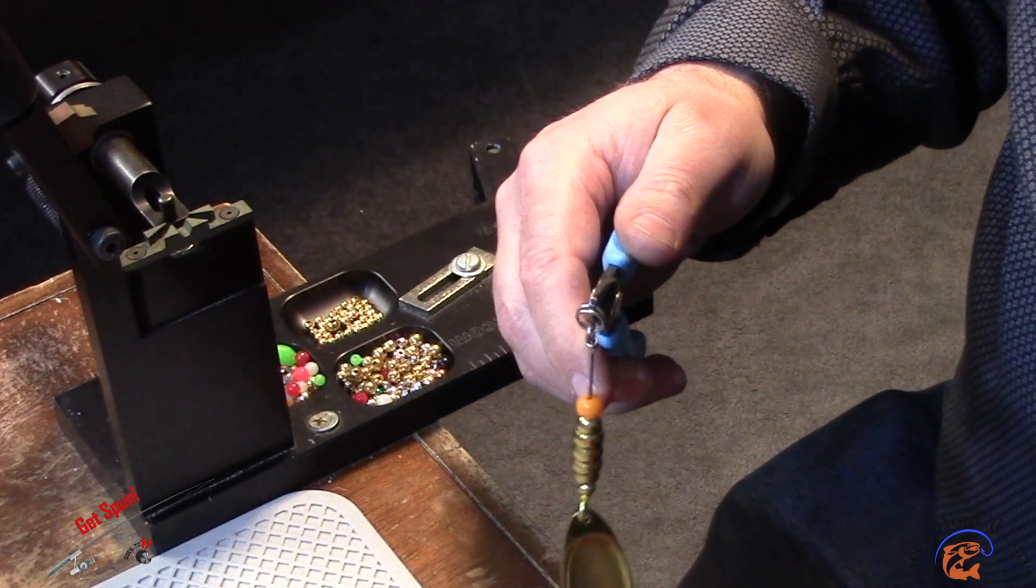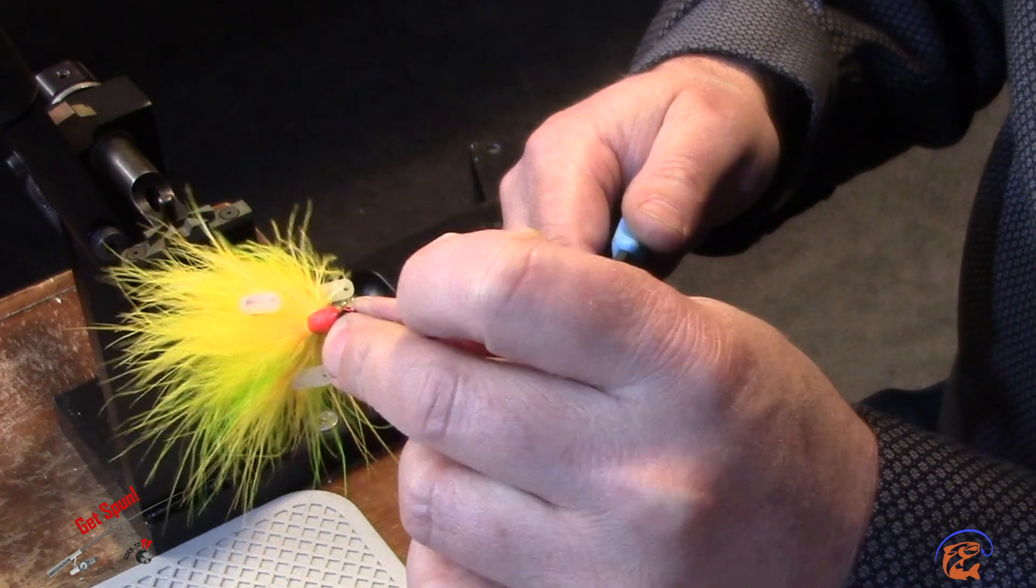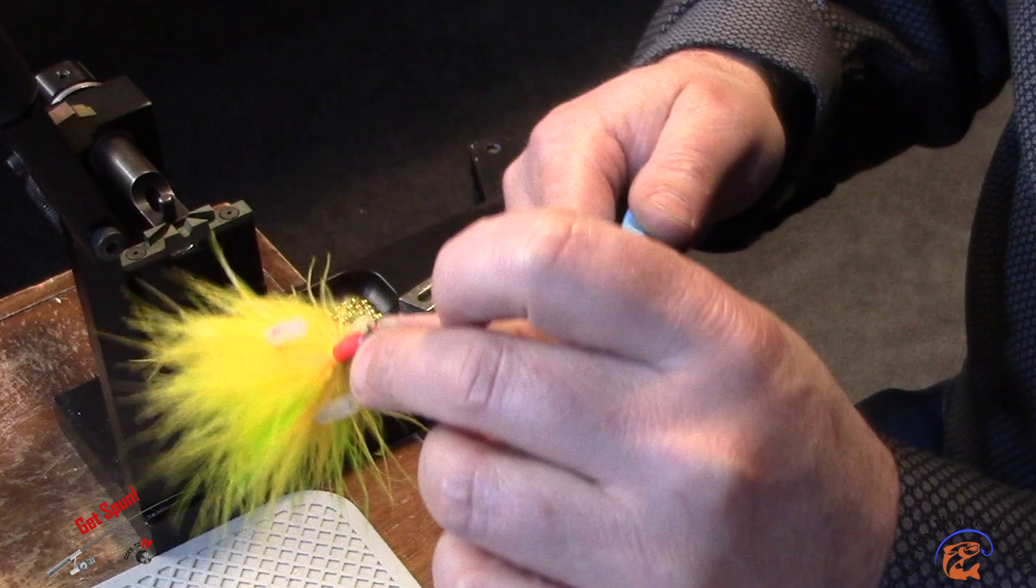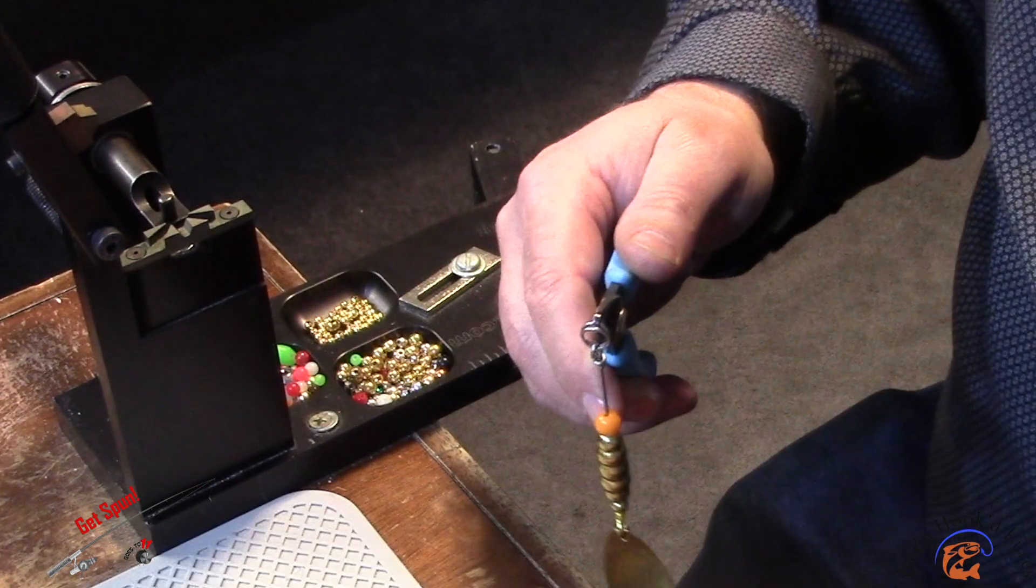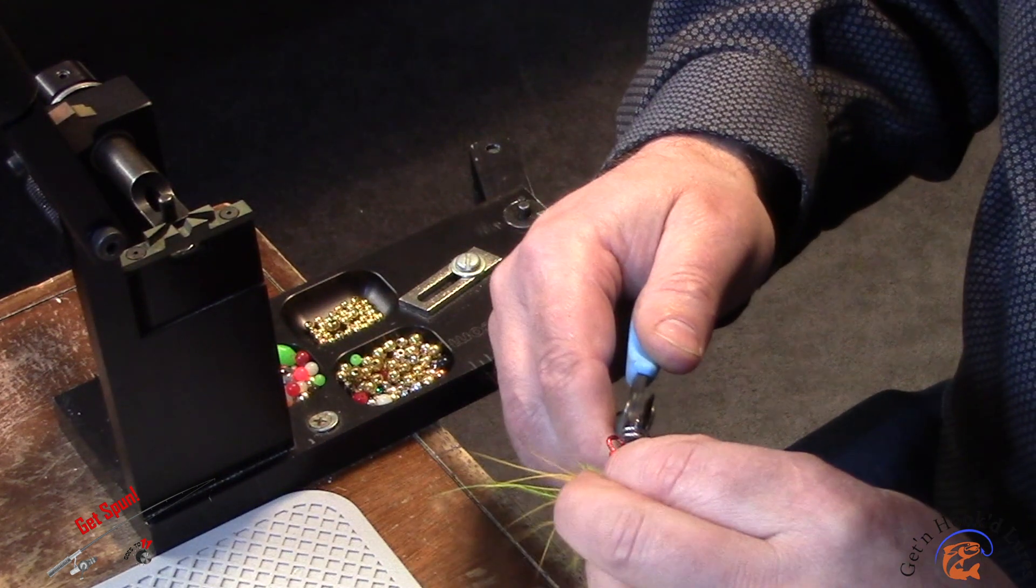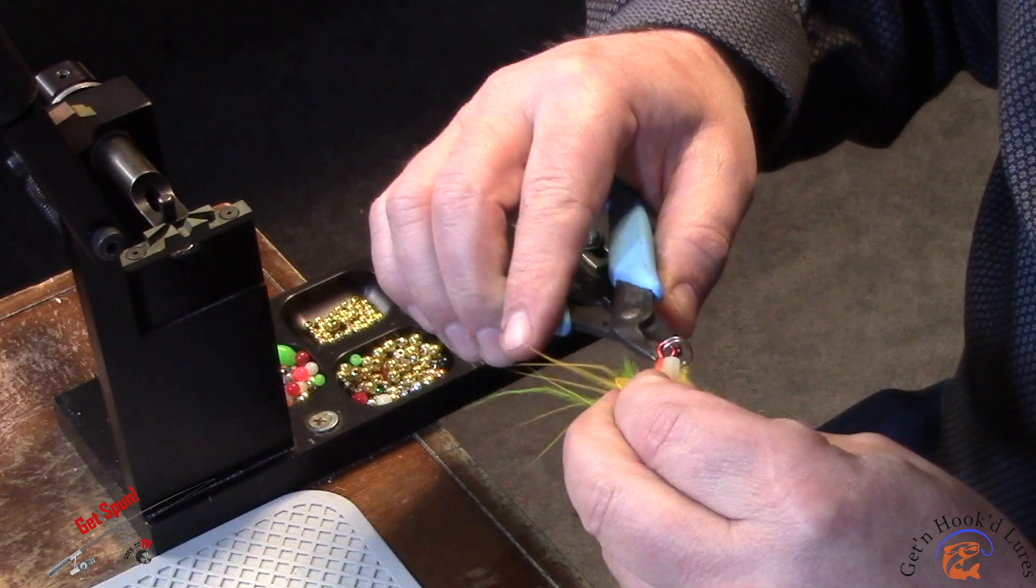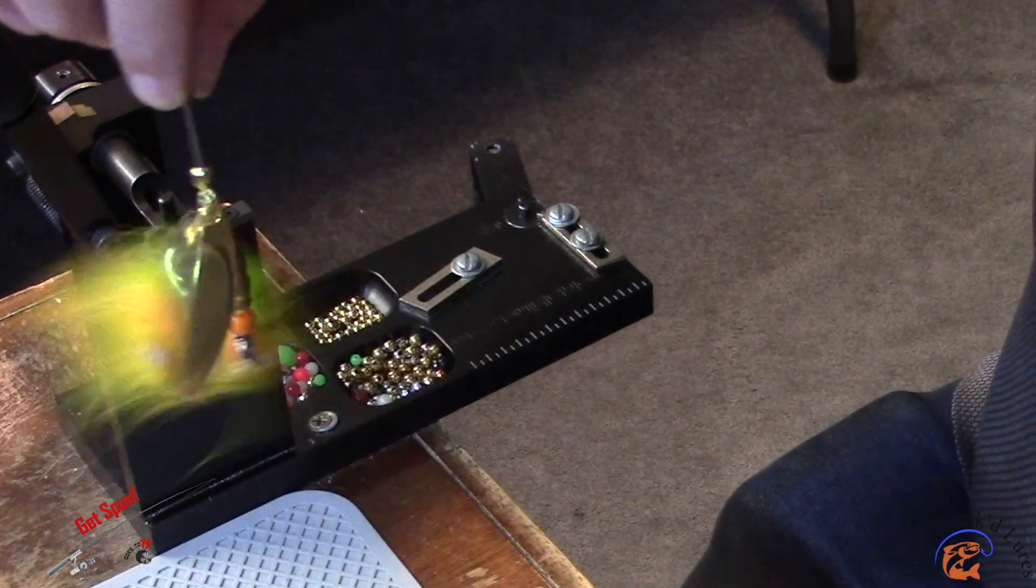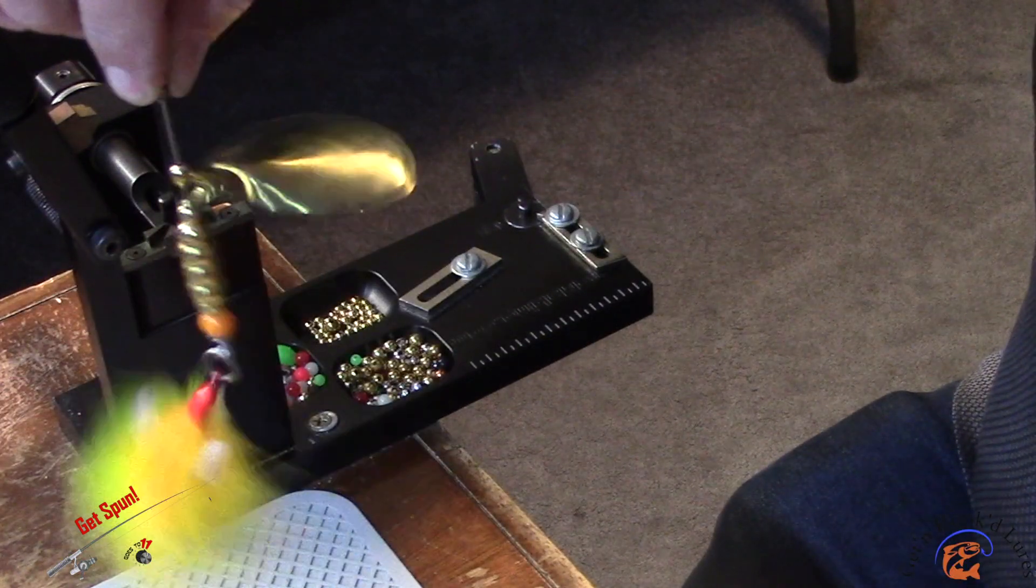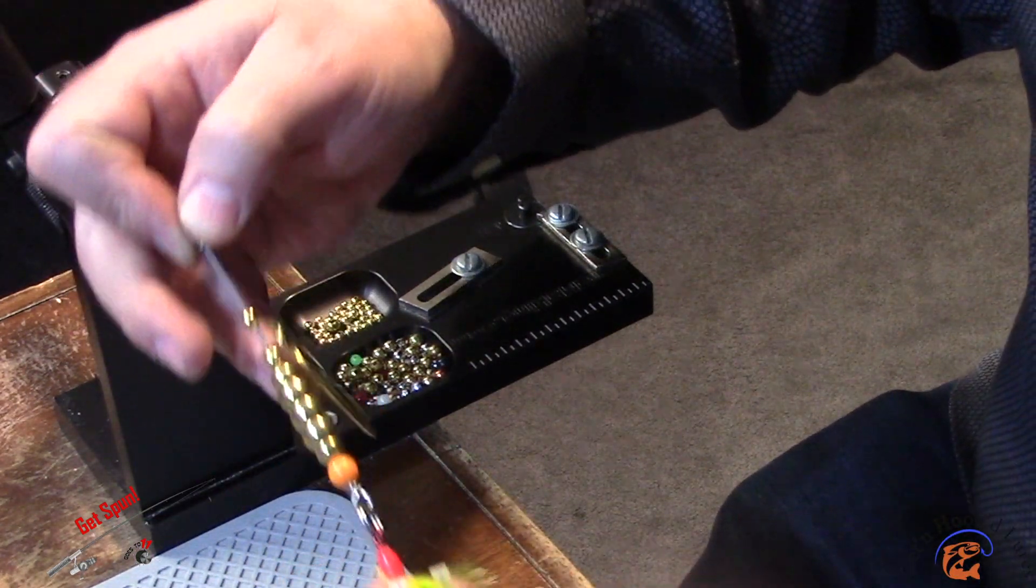And we've done up some size 1 treble hooks with orange fluorescent, green, and yellow marabou on them, and that's going to be the hooks we use on these new lures that we're doing. And I'll install that on there. Make sure it spins nice and free—it does.